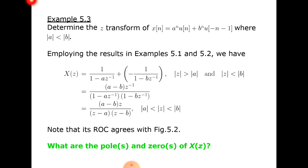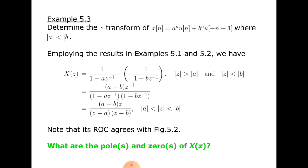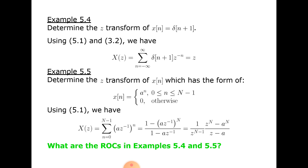Note that the ROC agrees. Now determine the Z-transform of x(n) = delta(n+1). The formula gives X(z) equal to the summation from minus infinity to plus infinity of delta(n+1) times z^(-n), which is equal to z.